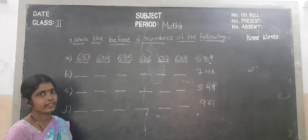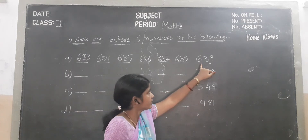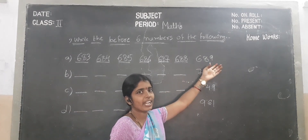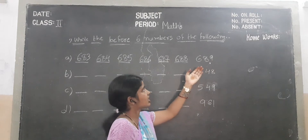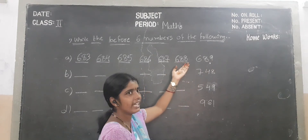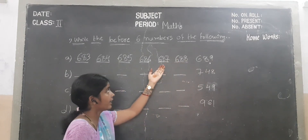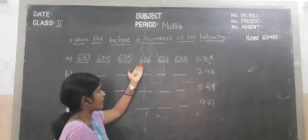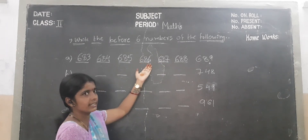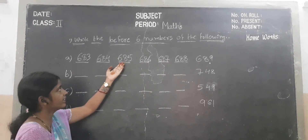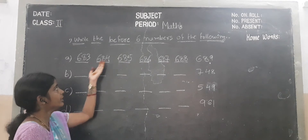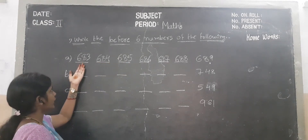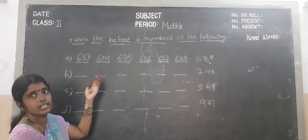One second children. The given number is 689. We subtract minus 1 — which number will become? Before number 688. Next before number 687. Before number 686. Before number 685. Before number 684. Before number 683.